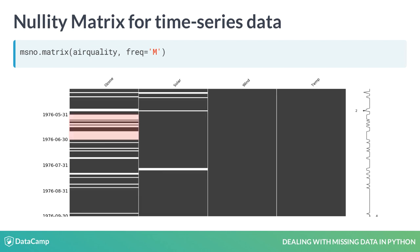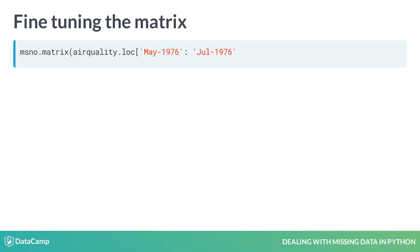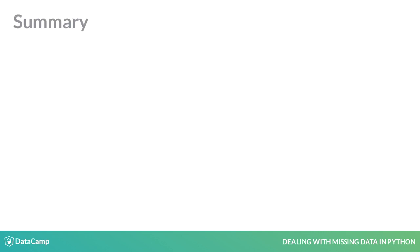We can further slice the dataframe between the months of May and July to obtain more clarity on the amount of missingness. Slicing will particularly be helpful when analyzing large datasets.